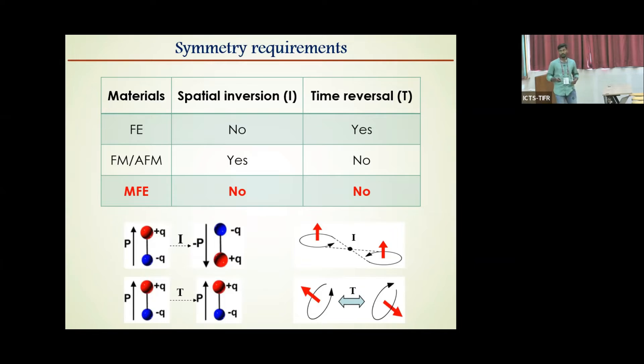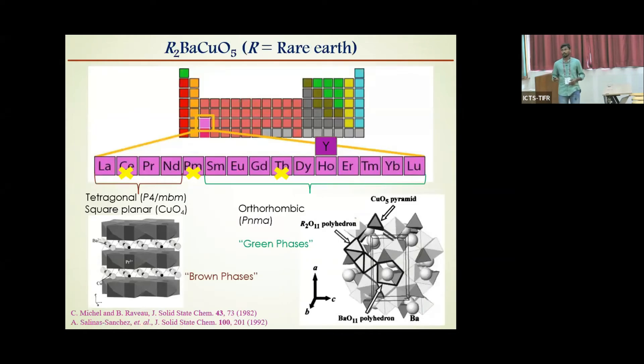We have been working to find new type two multiferroics. Along this line, we have worked on a family of compounds with chemical formula R2BaCuO5, where R is the rare earth ion. These compounds mostly crystallize in two different phases. With higher-sized rare earth from lanthanum to neodymium, they crystallize in tetragonal structure where copper ions are situated in square planar coordination, known as brown phases.